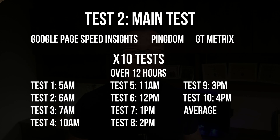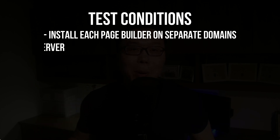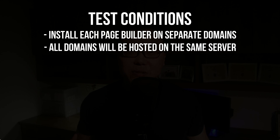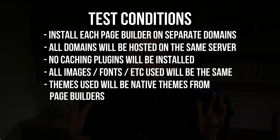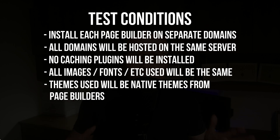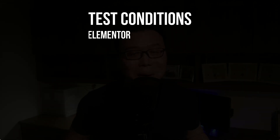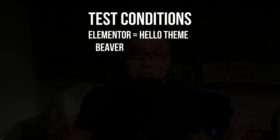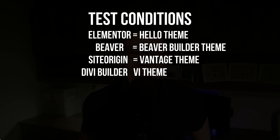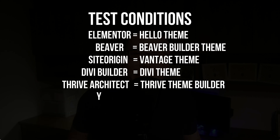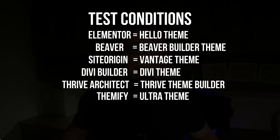To make this test fair, I'll install each page builder on a separate domain, but all domains are hosted on the same server. We will not install any caching plugin, and any external elements like images and fonts will be exactly the same. We'll also give each page builder its best advantage by installing it on its own native WordPress theme — for example, Elementor on the Hello theme, Beaver Builder on the Beaver Builder theme, SiteOrigin on the Vantage theme, Divi Builder on the Divi theme, Thrive Architect on the Thrive Theme Builder, and Themeify on the Themeify Ultra theme.